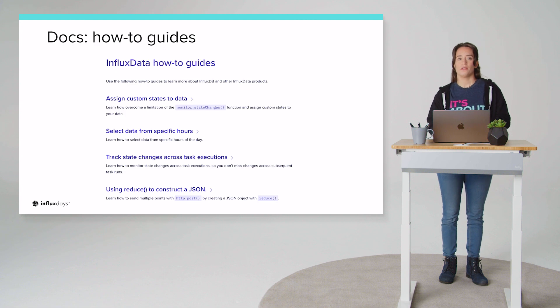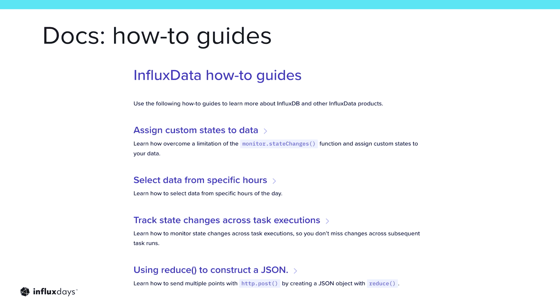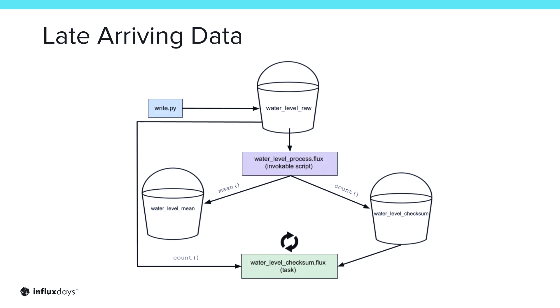And recently the developer advocate team has also added a section to the docs called how-to guides. These how-to guides right now are just Flux specific. They might include how-to guides on other things. But right now they really focus on unique, creative, and interesting ways that you can use Flux to do even more. And so here's a screenshot of some of the things that you can do. The one how-to guide that I really want to focus on is the late arriving data guide.